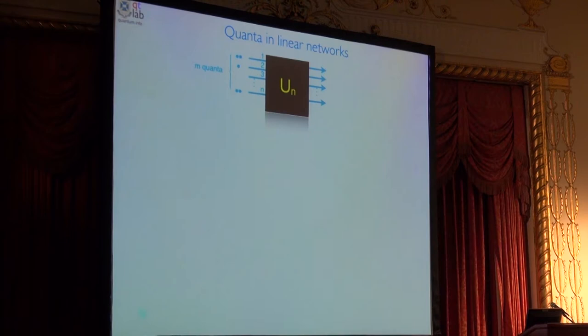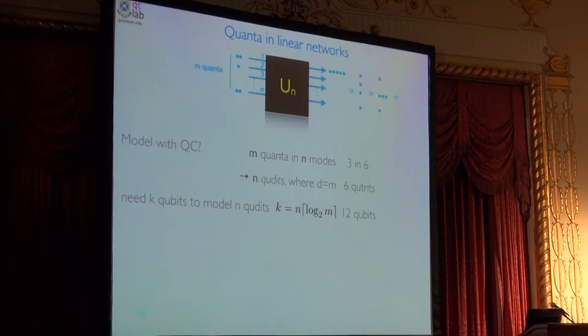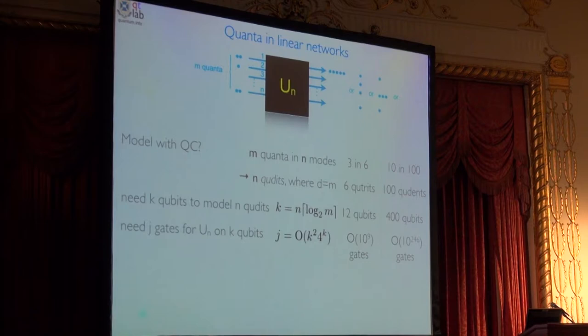This is the problem. I've got some unitary circuit. I'm going to throw in some quanta, and I'm going to ask what happens at the output. Do they all come out in one mode, or are they evenly distributed, or are they clumped, or whatever? Can I model that with a quantum computer? You can model anything with a quantum computer. If I have, say, three quanta into six modes, then I'll need six q-trits. If I've only got a cubic quantum computer, then I'll need 12 q-bits. And that unitary, that's an arbitrary unitary, randomly chosen from the Haar measure. So it's got no structure. So I need this scaling. So I'm going to need about a billion gates. But I could do that. If I wanted to do 10 photons into 100 modes, which is not hard, that's 100 q-dits, which is about 400 q-bits. But I'll need 10 to the 246 gates. So there's two take-home messages from this. One, don't use a quantum computer if you've got no structure to the problem. And two, photons are not q-bits.